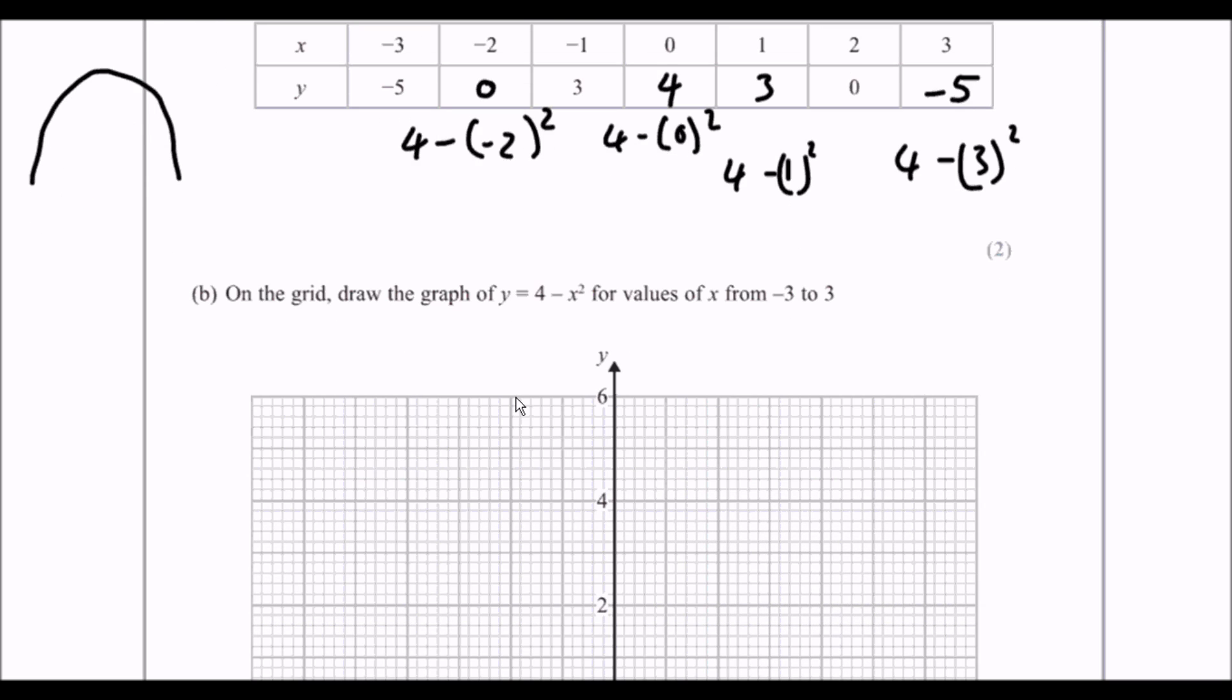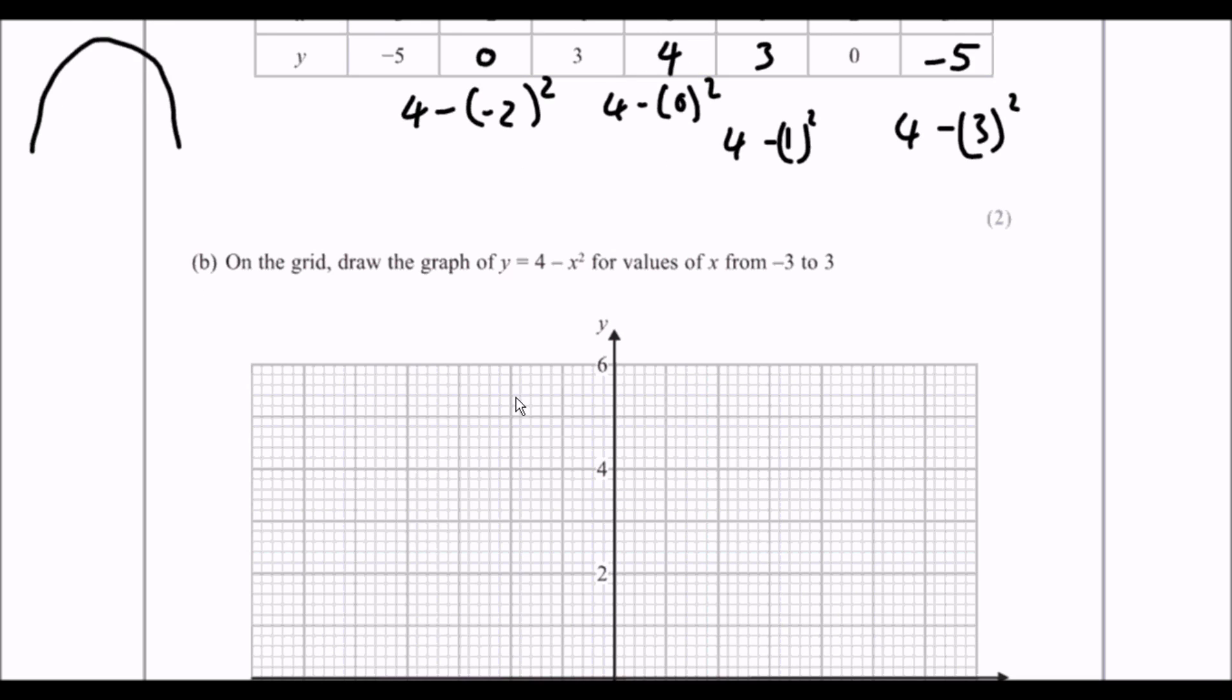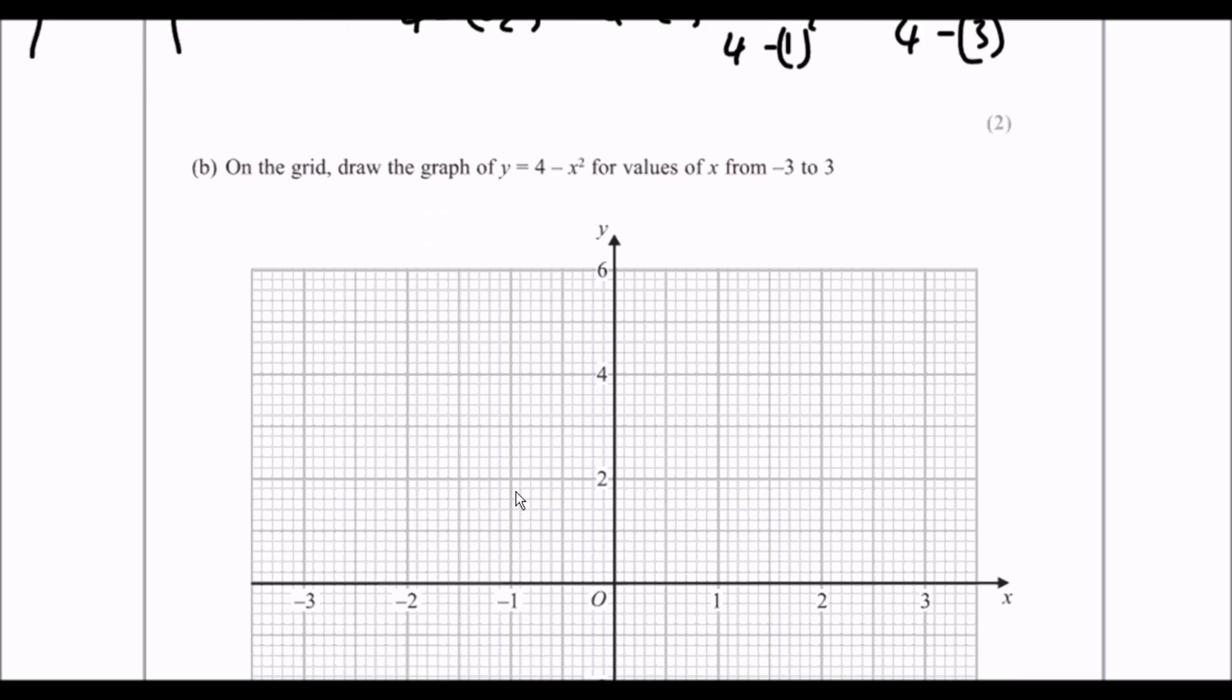We've just got to plug it on the graph. So, if I can see the 2 at the same time, I can't. So we've got 0, 4 is our first point. Minus 1, 3 and 1, 3.